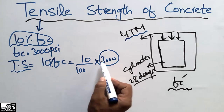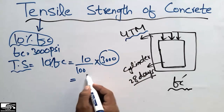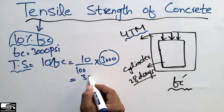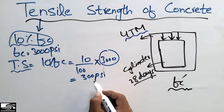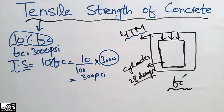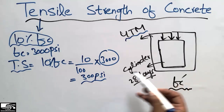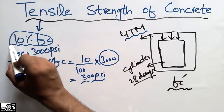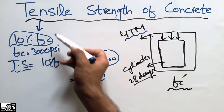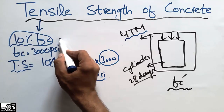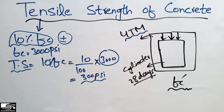So 10 percent of the compressive strength of 3,000 psi comes out to be 300 psi. This means that the tensile strength of concrete is usually less than the compressive strength, and generally ranges between 7 percent and 14 percent — there is a plus or minus allowance around the 10 percent value.